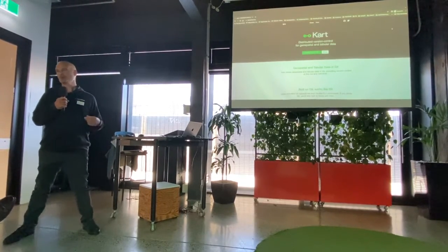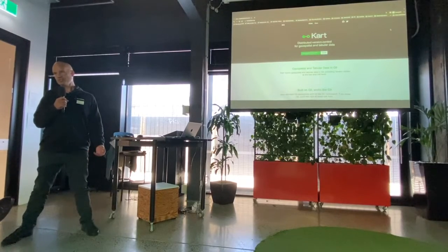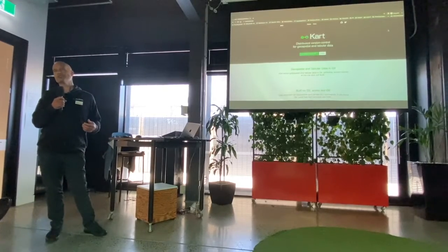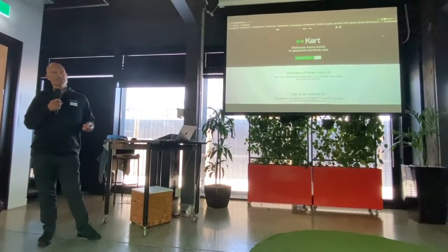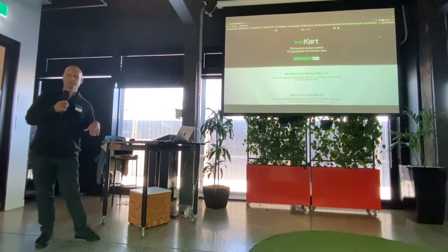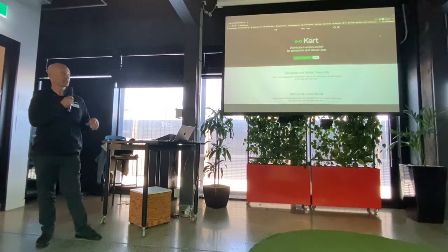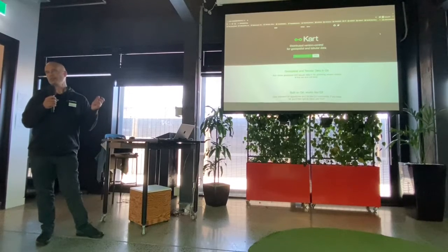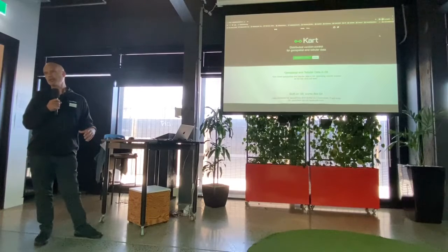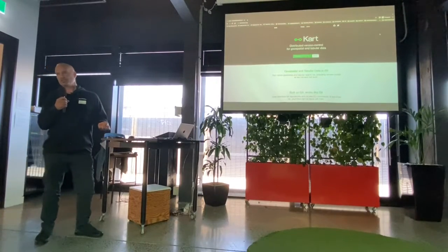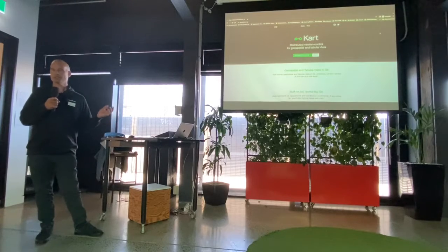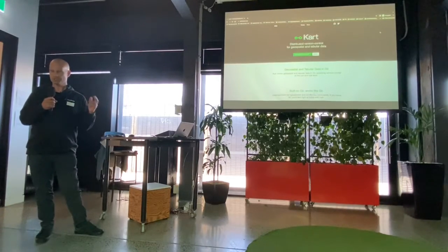Another option for getting data in is you can do a clone from any of the Coordinates sites. In the new UI at coordinates.com, you find the layer you're interested in, cruise into the data set, and find the SSH URL. Copy that, go back to your terminal folder, and do cart clone URL. That's going to pull the entire repo down into your local repository as a geo package. You also get the entire history with it.